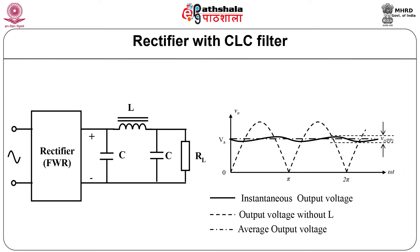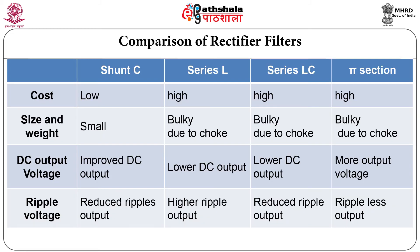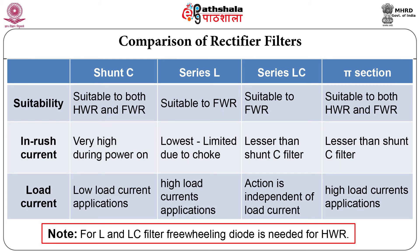This ripple can be still further reduced using a CLC filter as shown in figure. Now we will compare all types of filters. The CLC filter is also called a pi section. The comparison of the rectifier filters is shown in this table. For the shunt C filter, cost is low, but the disadvantage is very high inrush current. From this comparison, it is clear that the pi section filter is comparatively better than other types of filters.